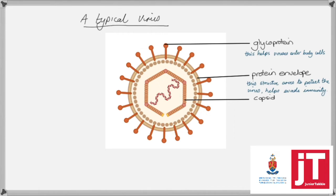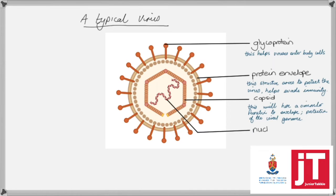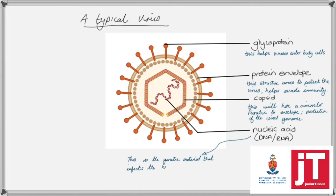The capsid basically does the same type of function as the protein envelope, except now this is to the viral genome itself. The genetic material on the inside is double stranded, as quite easily seen in the image, so this would most likely be the DNA of the virus. The genetic material is what is going to infect the host cell, using the host cell's biological machinery in transcription and translation to help itself become either replicated or expressed in that host cell.